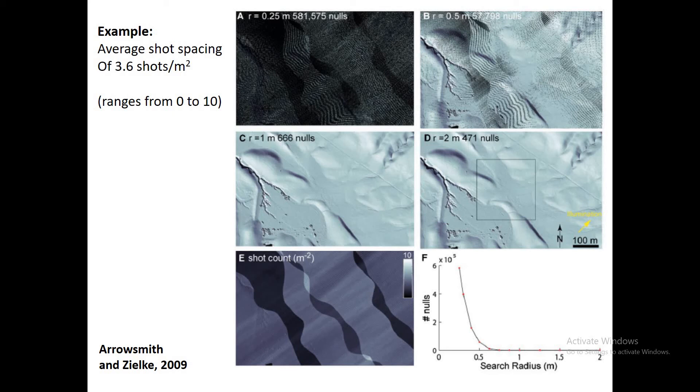One big question that comes up is, what is the best radius to use? How do we pick that search radius? The answer is, it depends on the density of your shot spacing. Here's a pretty cool example from Arrowsmith and Zielke, 2009, where they really looked into this question. They took a DEM along the San Andreas Fault, had an average shot spacing of 3.6 shots per meter squared. So each 1 by 1 meter pixel had an average of 3.6 laser shots in it. But of course, in practice, because of the irregularity, it ranged anywhere from 0 shots per meter squared to up to 10. The average isn't always a perfect predictor of what your min and max will be.